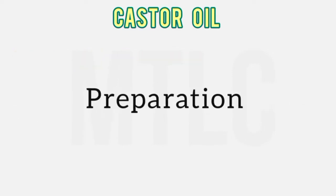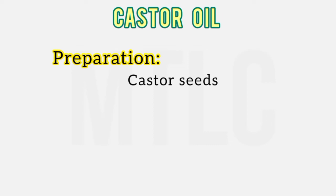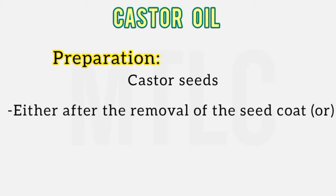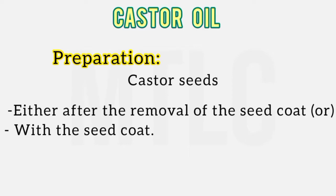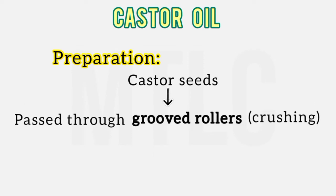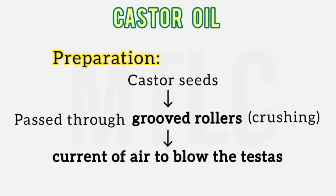How do we prepare castor oil from castor seeds? Because the oil is present on both sides of the seeds, we remove the seed coat. The seed coats are removed by crushing the seeds under grooved rollers — this is a large industrial process requiring machines. The outer covering of the seed, called the testa, is removed, and a current of air is blown to separate it. This process of removing the seed coat is called decortication.